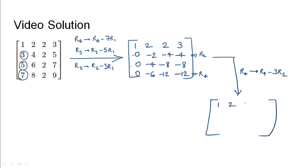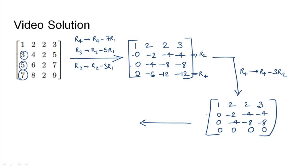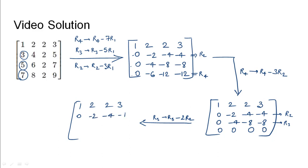This keeps the first and second rows the same, the third row remains the same, and the last row becomes all zeros. Then we can see that R3 is nothing but two times R2, so subtracting 2R2 from R3 gives: Row 1: 1, 2, 2, 3; Row 2 remains the same; Row 3 becomes all zeros; Row 4 remains all zeros. The bottom two rows are now zero.